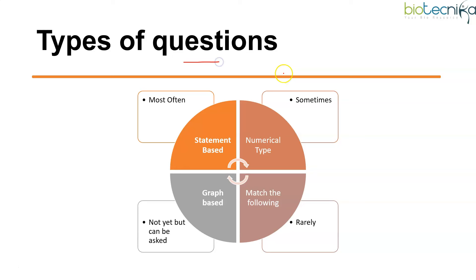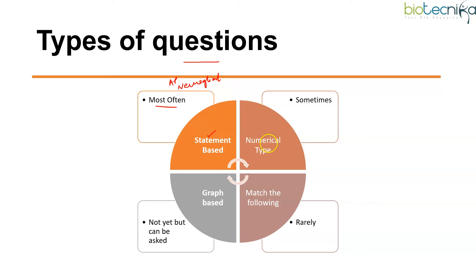Let us go through the types of questions that are asked from nervous system. Statement-based questions are most often asked — either from action potential, from different neuroglial cells, or they can be scenario-based, related to disease conditions, asking you to identify correct and incorrect statements.